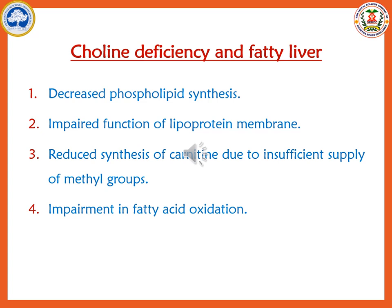The third and fourth effects of choline deficiency are reduced synthesis of carnitine due to insufficient supply of methyl groups and impairment of fatty acid oxidation. Carnitine's role is to transport fatty acids from the cytoplasm into the mitochondria, where they are oxidized to produce energy. When there is insufficiency of methyl groups, carnitine cannot perform its function, causing fatty acids to accumulate in the cytoplasm, leading to fatty liver. Thus, insufficient methyl groups also impair carnitine function and fatty acid oxidation, leading to the fatty liver condition.